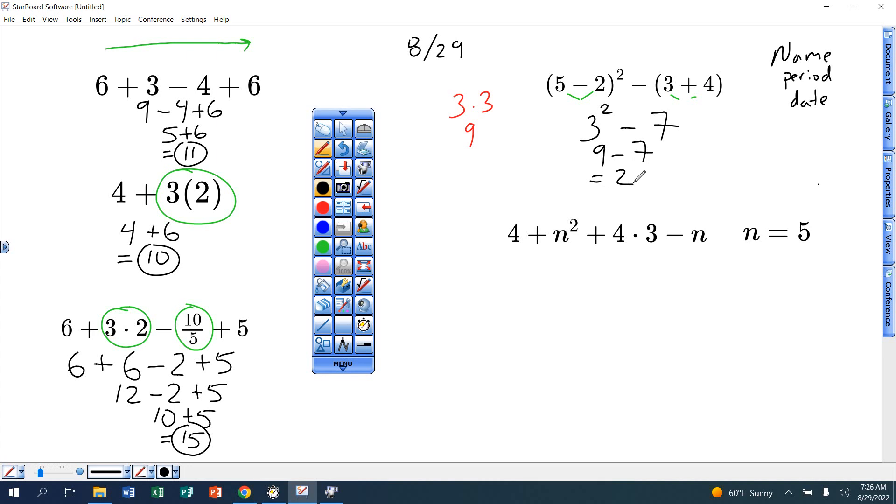Alright, last one to warm you up. This one, you're going to evaluate and plug this n in and rewrite it with just the n number replaced, and then go from there. So I got 4 plus, I'm going to put that n number right there, 5, that second power, that 2 stays there. Plus 4 times 3, and then put that 5 right here. For this new rule here, parentheses always come first before anything. But now exponents come second, and then multiplying, dividing next, and then adding, subtracting last.